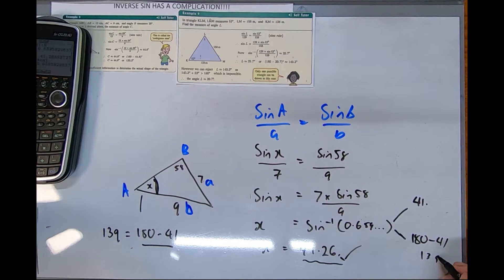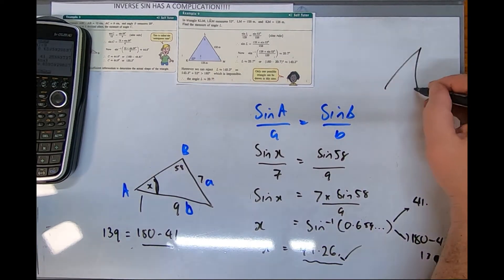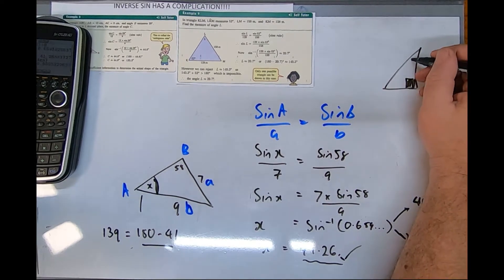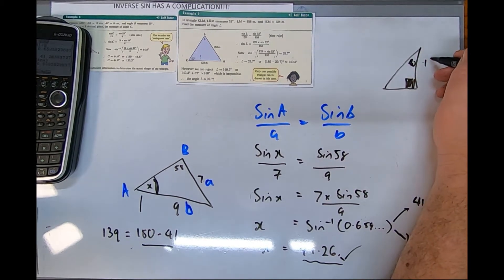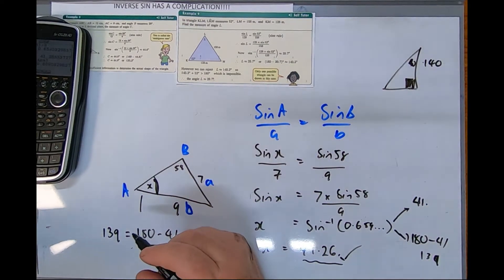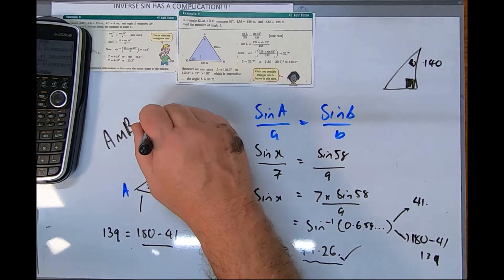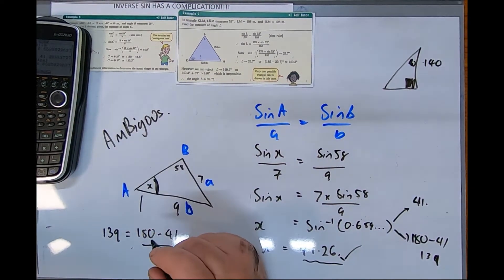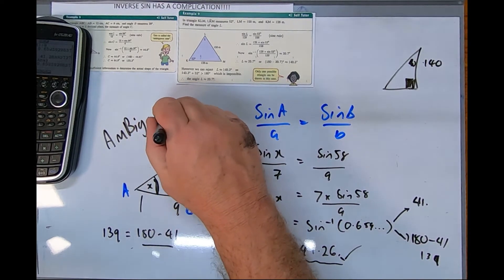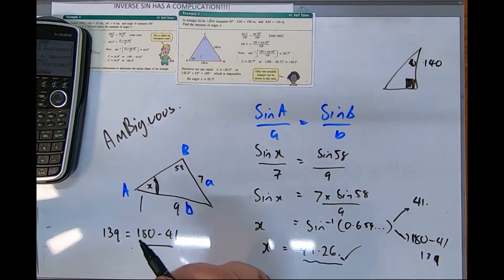However, the math from the calculator could give us 41 or 180 take 41, which is 139. There are two possible answers. Normally for right angle triangles you're never going to get the other answer because 90 degrees is all used up. This is going to be called our ambiguous case.